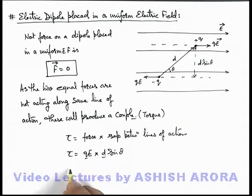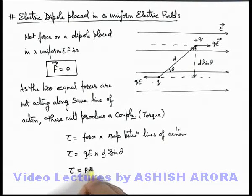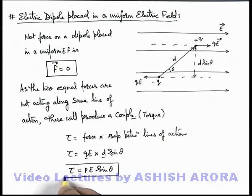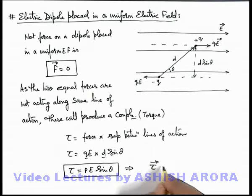And here we can write qd as p so torque can be written as pE sine theta where p is the dipole moment of this dipole in electric field. And vectorially, this expression can be written as torque is equal to p cross E.